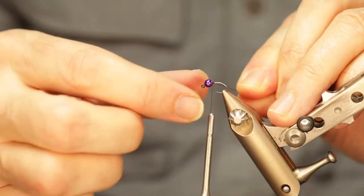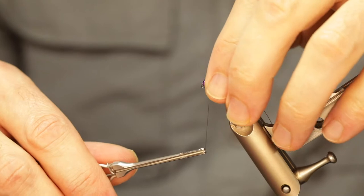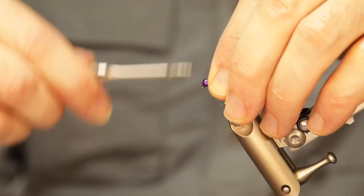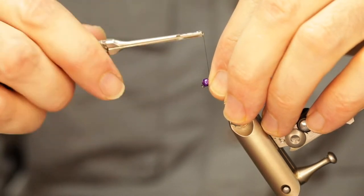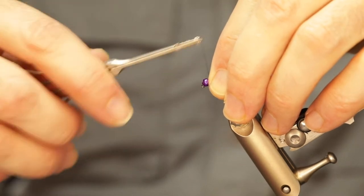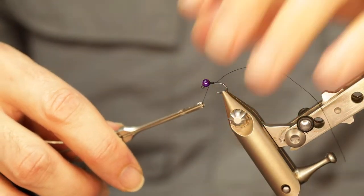The first thing to do is to fix the bead into place. So to do this I tend to secure the thread and then hold the bead with my fingers and then just wrap around the head of the bead until it's fixed in place. This prevents it from moving around during the rest of the tie.